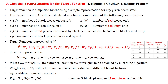The target function is simplified by choosing a simple representation for any given board state using the neural network hypothesis function. Assume the target function V-cap is calculating the linear combination of the following board features. Each board state has some set of features x1, x2, etc., and there are six features in total, each represented with patterns.